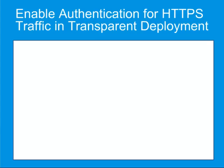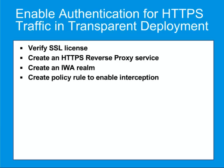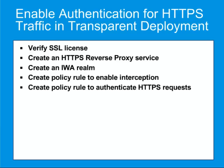Explicit deployments can authenticate HTTPS traffic without any additional configuration, provided that you have a valid SSL license installed. The following steps are required if you want to authenticate HTTPS traffic in a transparent deployment: verify that you have an SSL license; create an HTTPS reverse proxy service to listen for authentication requests; create an IWA realm for authenticating your HTTPS traffic; create the policy rule to enable the appliance to intercept HTTPS traffic; create the policy rule that enables the ProxySG to authenticate client HTTPS requests; and install the policy. For more details, refer to the ProxySG First Steps Web Guide.